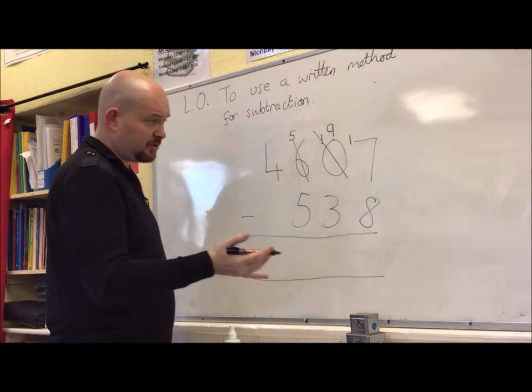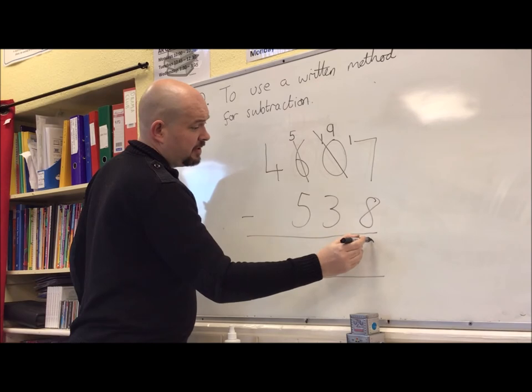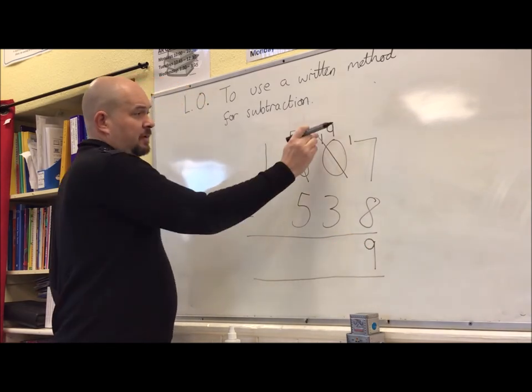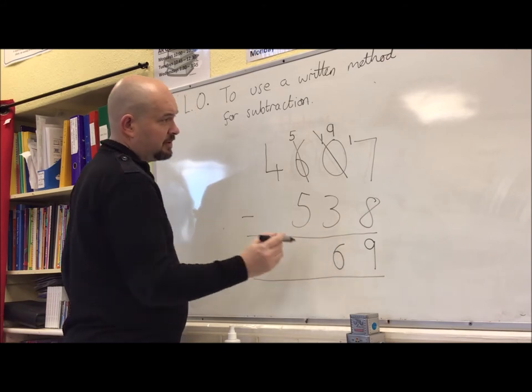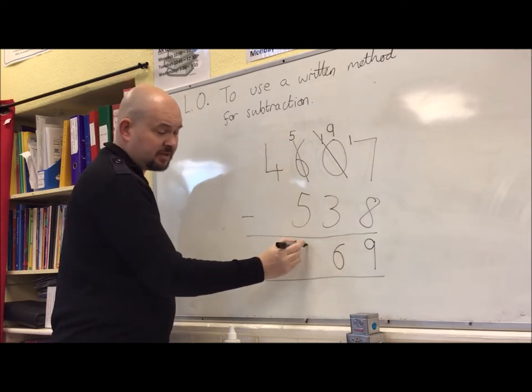So 17 take away 8 I can do now. 17 take away 8 will leave 9. 9 take away 3 here will leave 6. 5 take away 5 will leave nothing. Done.